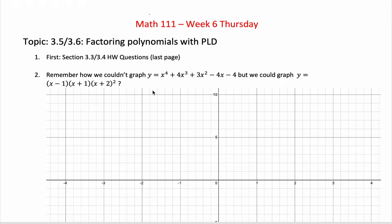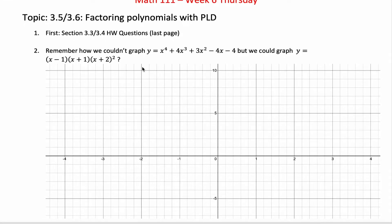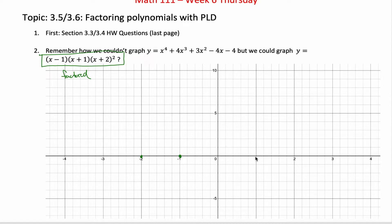Really, it's the starting point. If you think about what we did in the previous section, we were always given the factored form of a polynomial. For example, x minus 1 times x plus 1 times x plus 2 squared. When your polynomial is presented in this factored form, it's not too hard to graph. We could start with the different x-intercepts — one at negative 2, negative 1, and positive 1 — and the multiplicities of those roots are 1, 1, and 2 respectively.